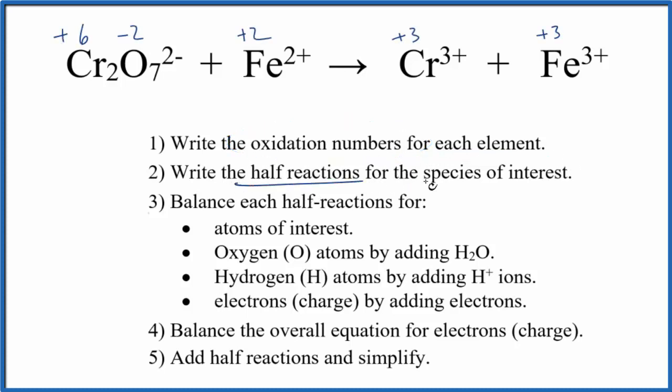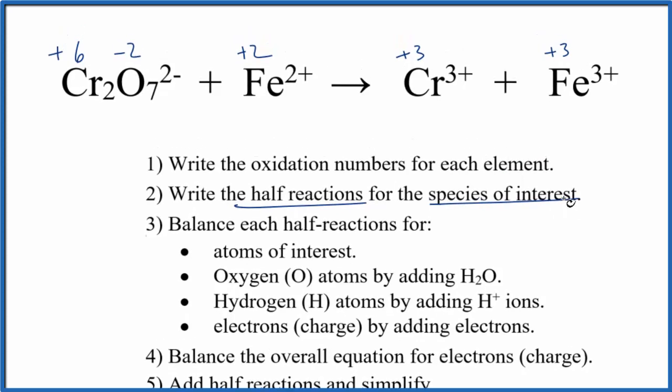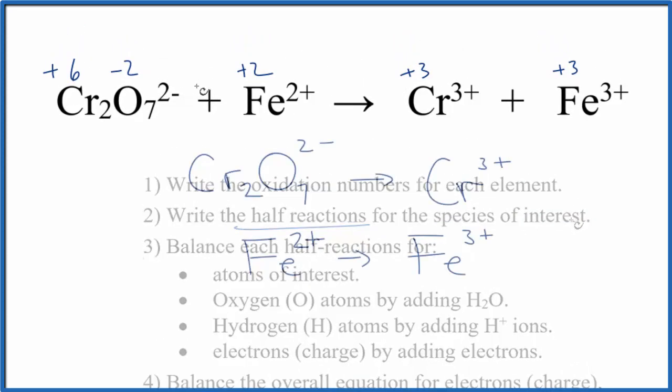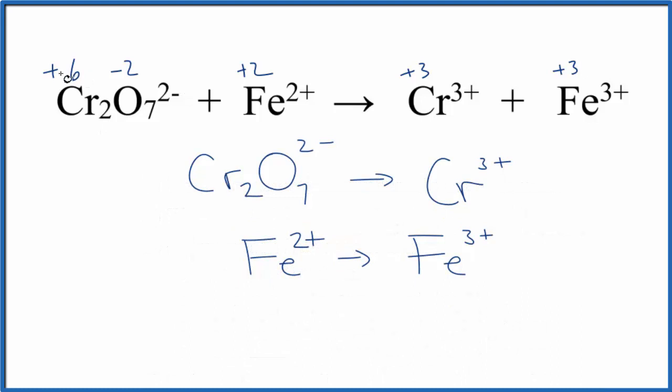Now we can write the half reactions for the species of interest. Those are the ones whose oxidation numbers change. That'll look like this. So for each chromium atom, we go from +6 to +3. That means we've started the bigger number to a smaller number. We've been reduced here. We also lost these oxygen. So that's reduced.